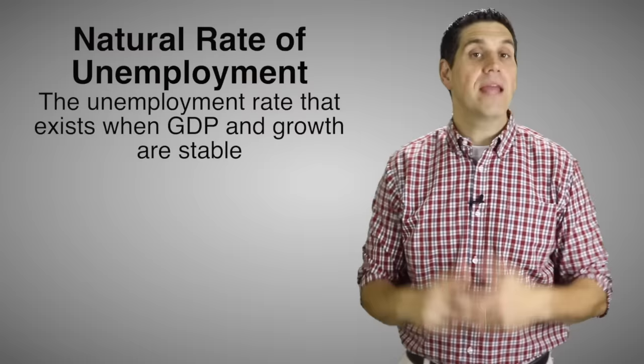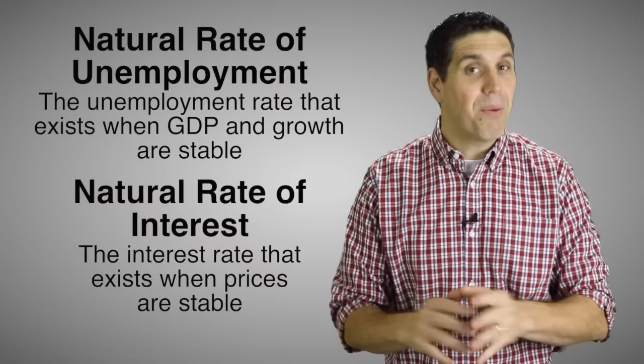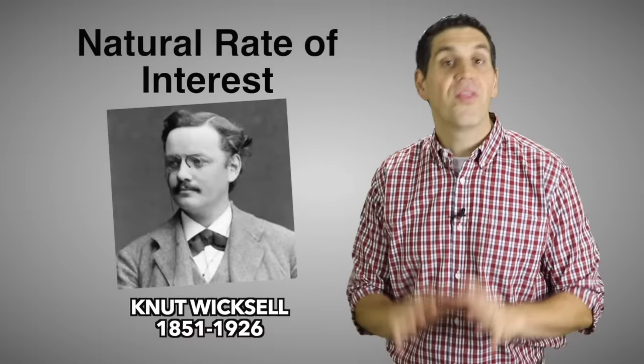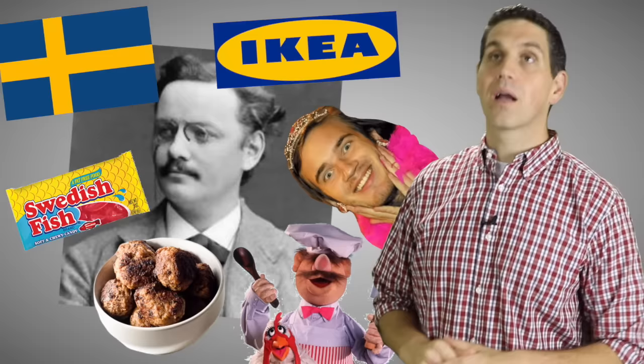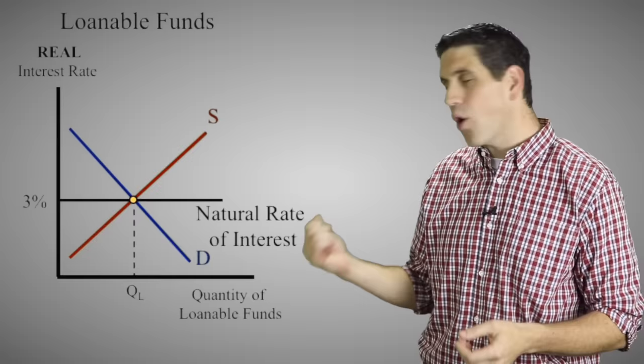Bonus round. In a standard macro class you learn about the natural rate of unemployment — the idea that there's a certain amount of unemployment even when the economy is doing great. There's also something called the natural rate of interest: the interest rate that exists when the economy is at full employment and price level is stable. The concept was invented by Swedish economist Knut Wicksell. The natural rate of interest is essentially the long-run trend created by the loanable funds market, and historically in the United States it's somewhere between two and three percent — though it's significantly lower today.